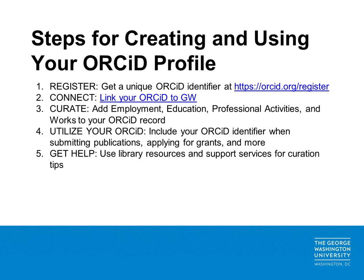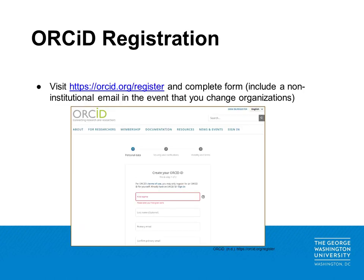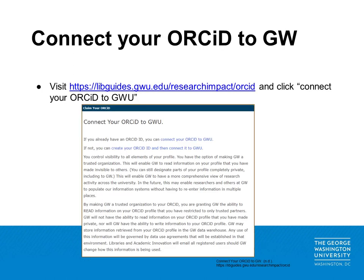We'll now go through each of these steps in greater detail. To register for an ORCID profile, go to ORCID.org/register and complete the brief registration form. We advise including a non-institutional email address to ensure that you retain access to your profile in the event that you change institutions. It is also possible to connect your ORCID to GW when registering for an account or to connect your existing account to GW.